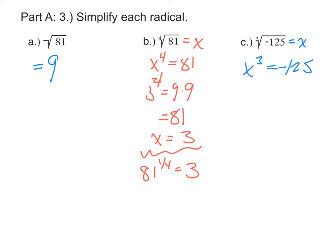Guessing and testing, we'll find out that 5 to the 3rd is 5 times 5 being 25 times another 5 is 125. So negative 5 to the 3rd would be negative 125. That means cubed root of negative 125 must be negative 5.